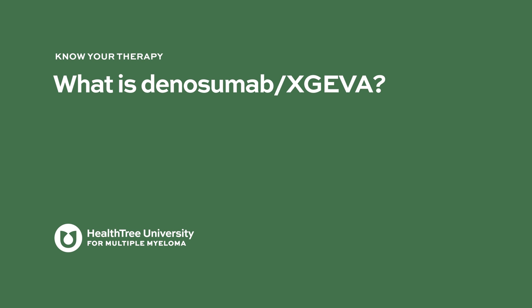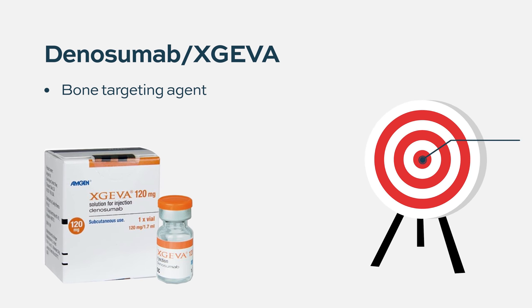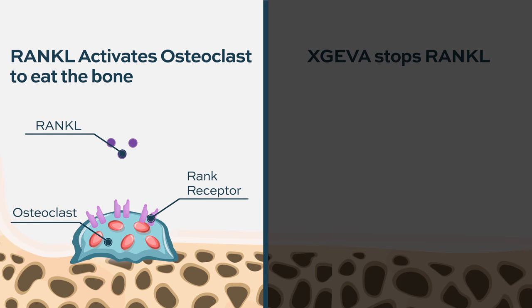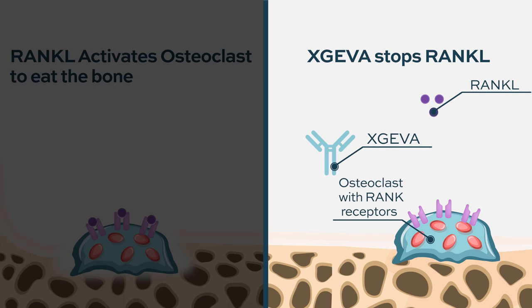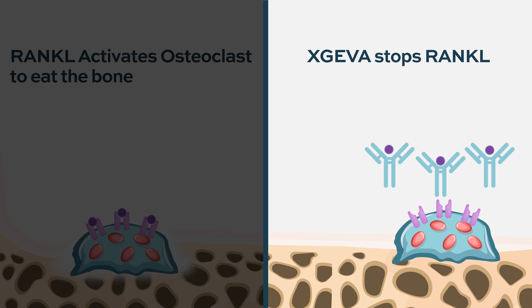What is Denosumab or Xgeva? Denosumab is a bone targeting agent. It's an antibody that targets something called RANK ligand. What it does is it activates cells called osteoclasts in the bone marrow and in the bone, and these osteoclasts destroy the bone. So what Denosumab, or Xgeva, does is it inhibits the osteoclasts by blocking RANK ligand, which is a protein important for osteoclasts.